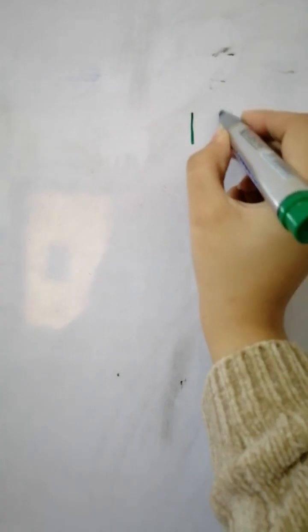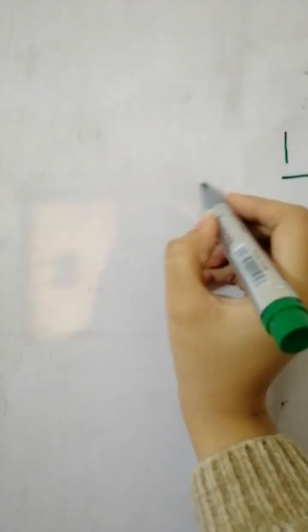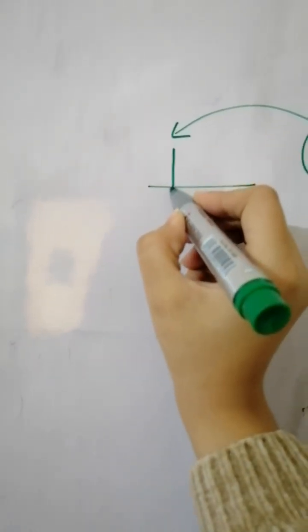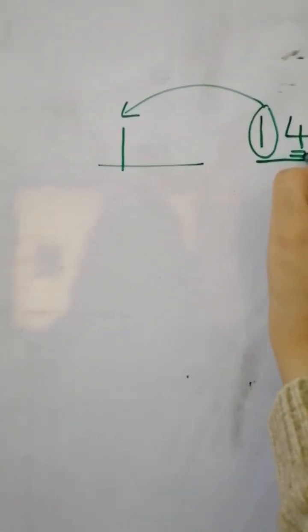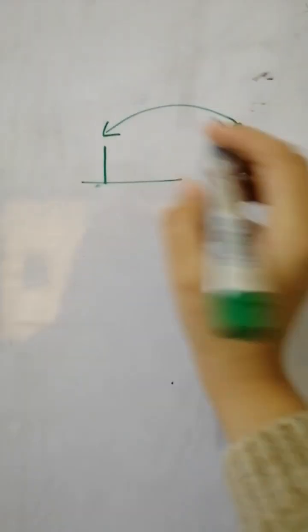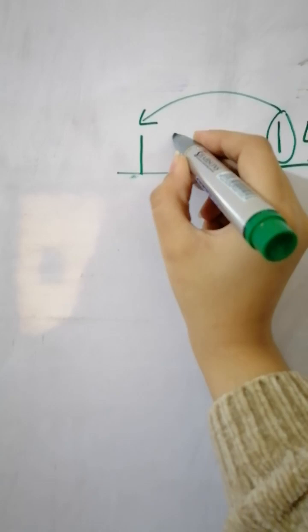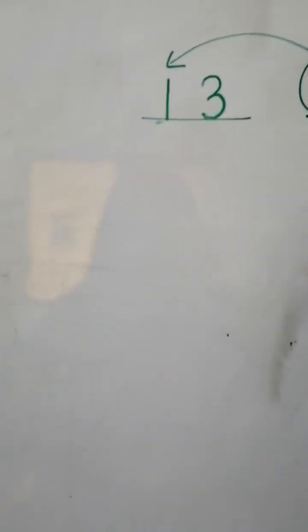If we have a number like 14 and we don't have zero in this number, then we will write the first digit as it is — one — and we will do the 'before number' of only the second digit. What comes before four? Five, four, three — yes, we will write three.